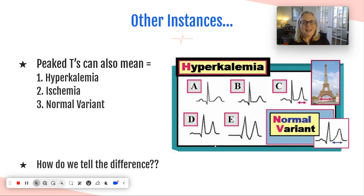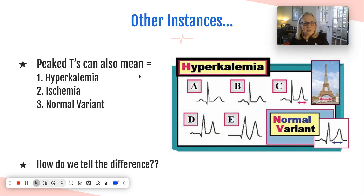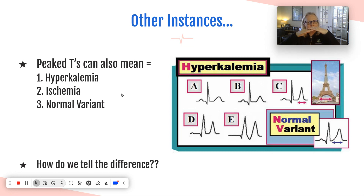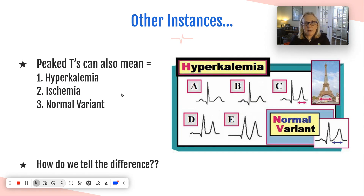What does hyperkalemia mean? On the periodic table, K is potassium. So hyperkalemia, with the K right in the middle, refers to high potassium levels. Potassium is one of those ions that does the depolarization in the heart muscle. If we have weird potassium levels - high or low - we don't depolarize properly. That's why these electrolytes have to be spot on.